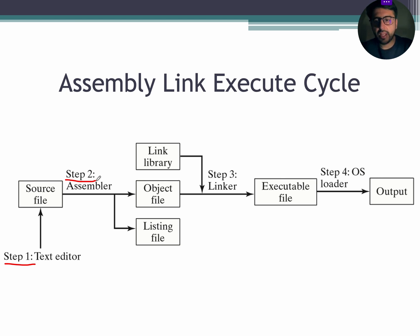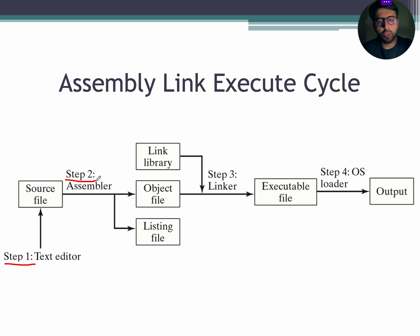An object file contains a machine language translation of the program. Optionally, the assembler also produces a listing file. A listing file contains a copy of the program's source code, line numbers, offset addresses, and translated machine code. The extension of the listing file is .lst. In case of errors, the programmer must return to step 1 and fix the errors.